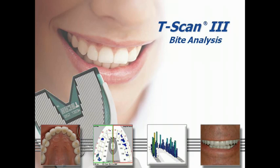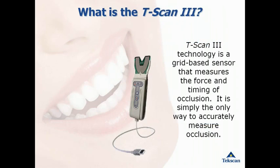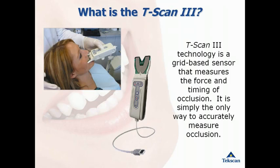The following is a demonstration of the T-Scan3 bite analysis system. The T-Scan instantly displays interferences, timing, and force levels for evaluation and treatment of occlusion. Your patient simply bites down on an ultra-thin sensor and the software displays the timing of contacts and levels of force in vivid graphics. With this data, visualizing and achieving a balanced bite is easy to accomplish.